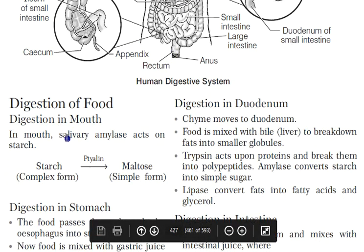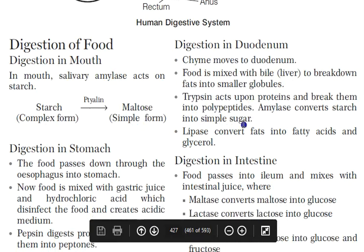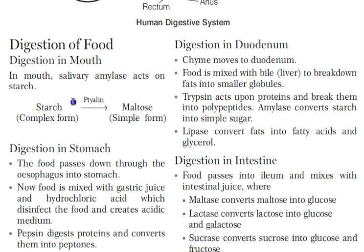Digestion begins in the mouth. Salivary amylase — also called ptyalin — acts on starch. Our main food is carbohydrate, which is most abundant in our diet. Salivary amylase converts complex starch into maltose. The parotid gland is the largest salivary gland.